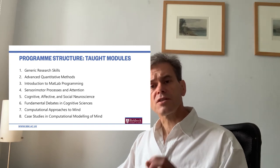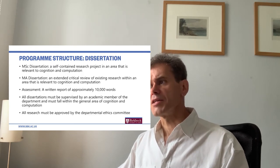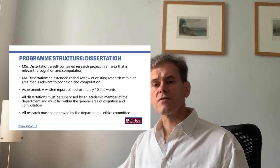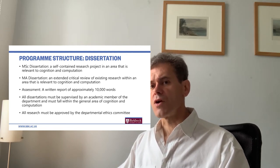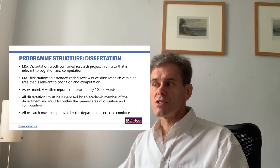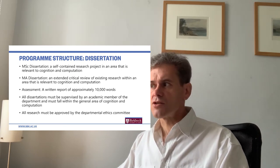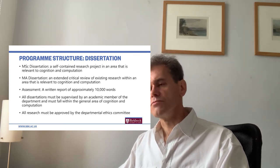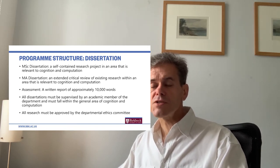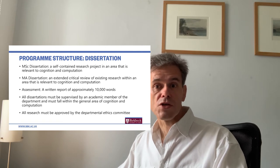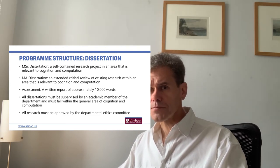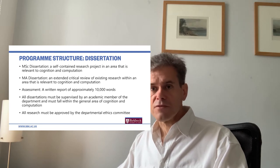The key distinction between the MSc and the MA is the dissertation. In the MSc, the dissertation is a self-contained research project relevant to cognition and computation — involving novel research — whereas in the MA, the dissertation is an extended critical review of existing research approached from a critical perspective.